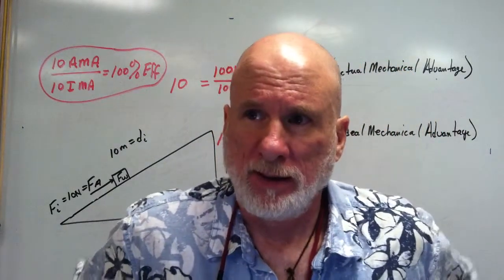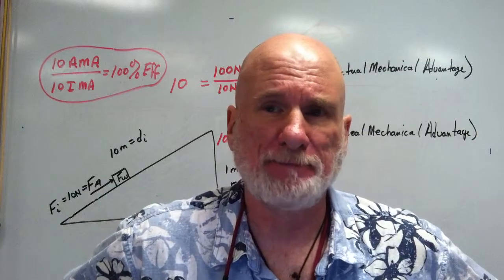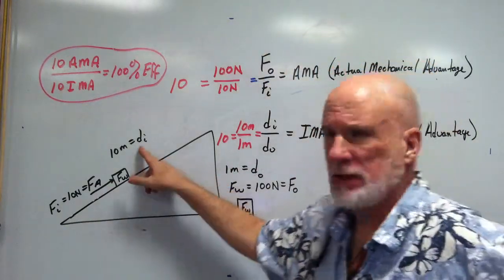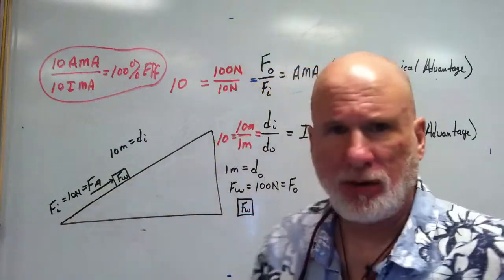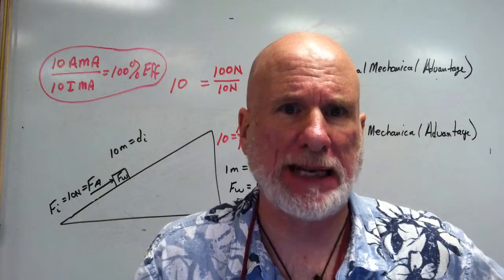All right. The inclined plane. The DI is 10 meters. That's how long the hypotenuse is. That's how long the plane is.